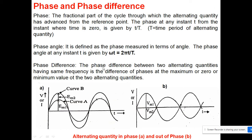An important aspect when discussing AC is phase and phase difference. Phase is nothing but the fractional part of a cycle through which the alternating quantity has advanced from the reference point. The phase at an instant time t is given by t divided by the total time period of the alternating quantity.